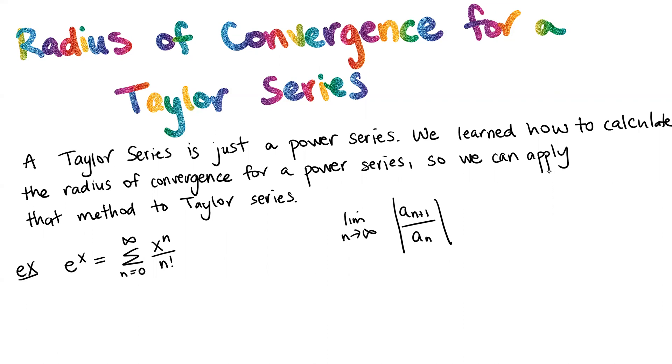If the limit is equal to zero, then the radius of convergence is infinite, meaning that this series a_n is going to converge for all values of x. If our limit here is equal to infinity, then that means that this series diverges, so the radius of convergence is zero.